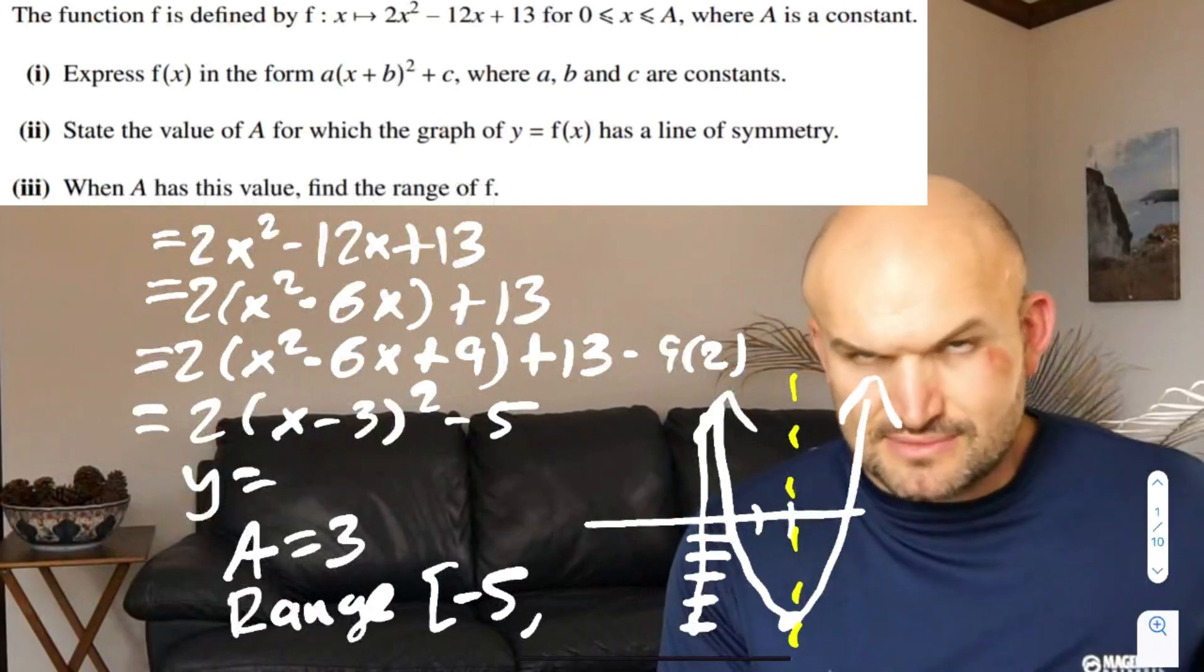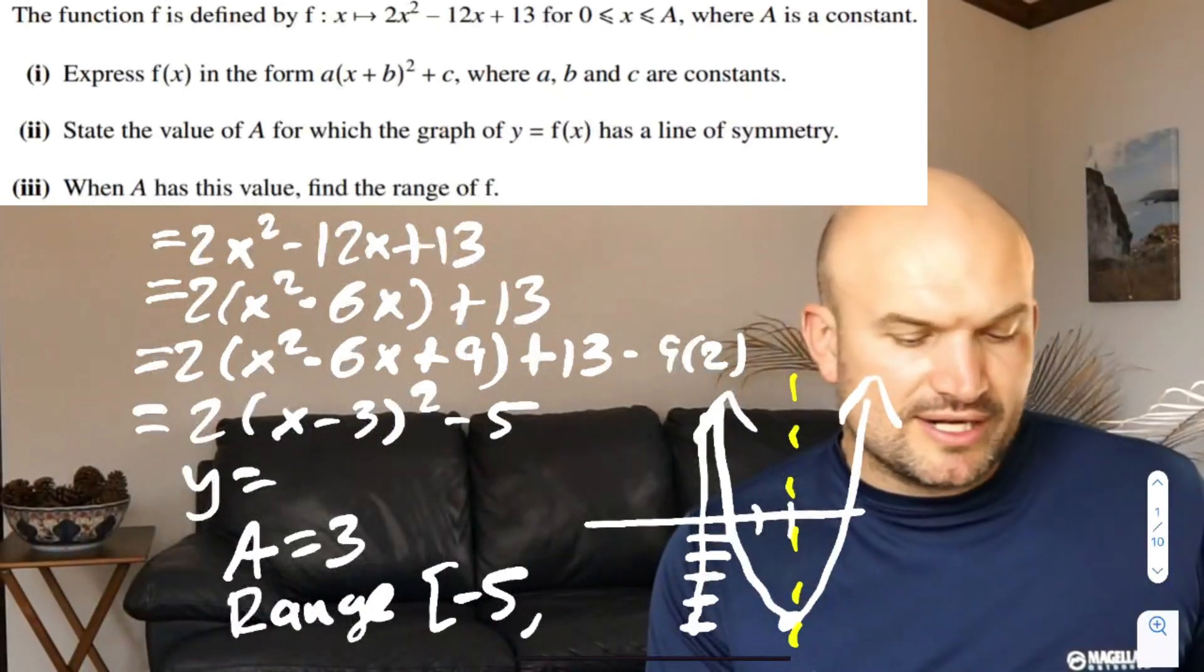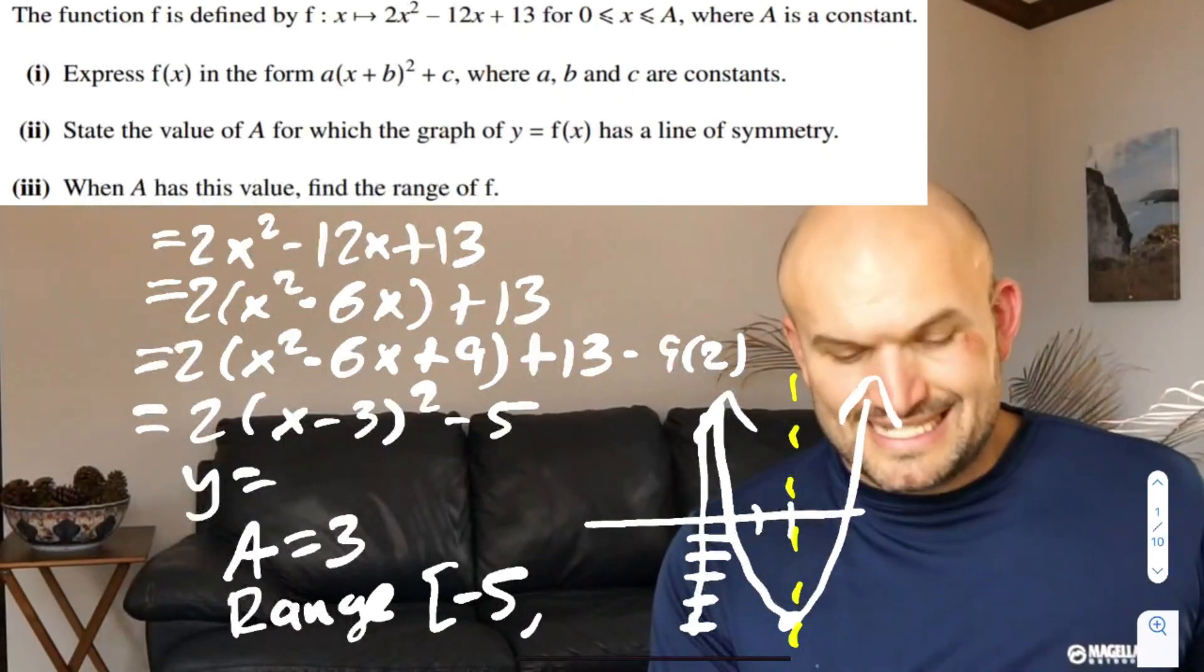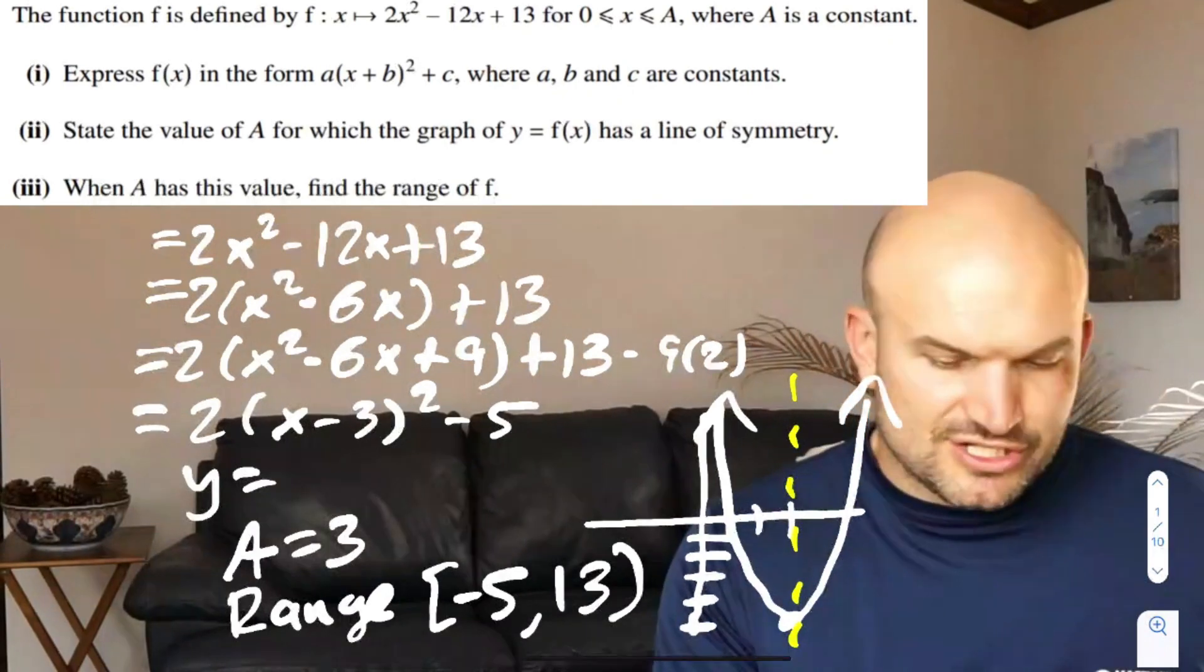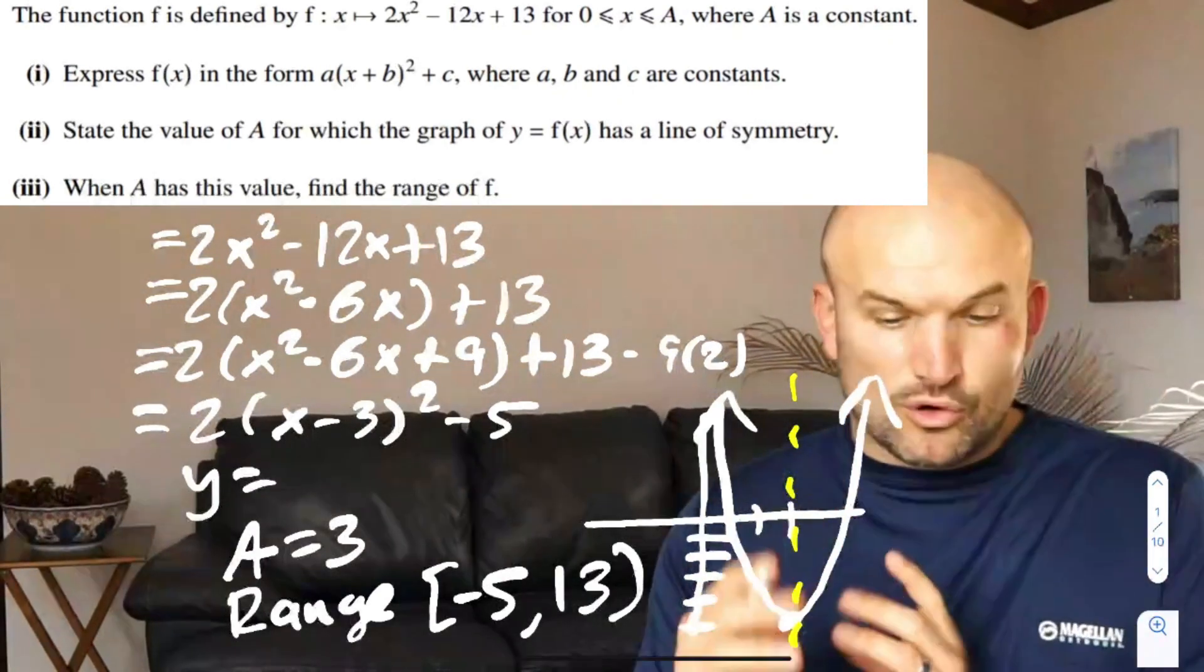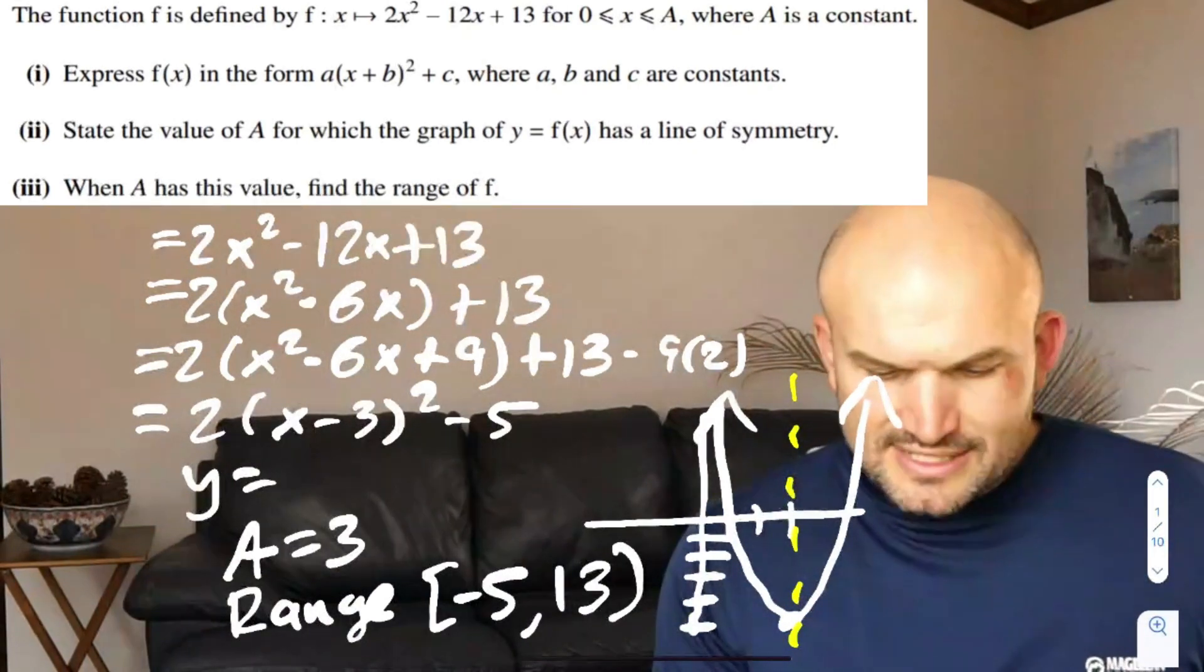Let's make sure I did that correct. Zero minus three is negative three. Negative three squared is nine. Nine times two is 18. 18 minus 5 is 13. So the highest value would be 13. If I wanted to redraw a portion of that graph, I could use a different color.